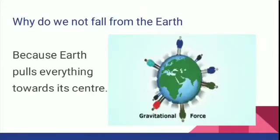If we are present on the outer surface of the Earth, then why do we not fall from the Earth? Our Earth has a special capacity — it pulls everything towards its center. Due to this pull, we are attached to the surface of the Earth and we do not fall from it. The force by which Earth pulls everything towards its center is called gravitational force or gravity. You will study more about gravity in higher classes. Just know that because of this gravitational force, everything is pulled towards the center of the Earth. That is why we do not fall from the surface and we are stuck to it — otherwise we would fall into space.